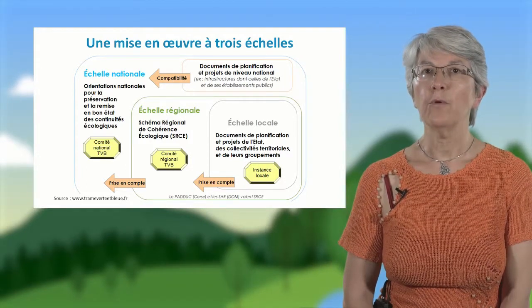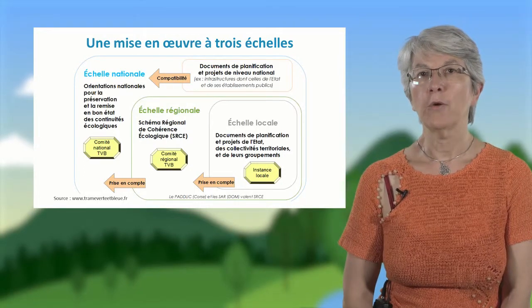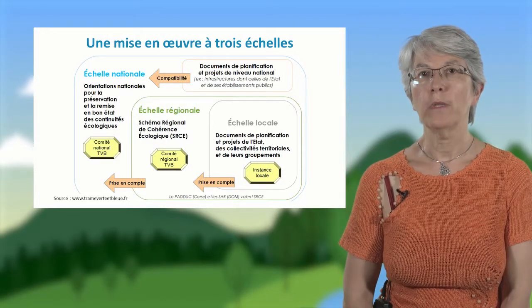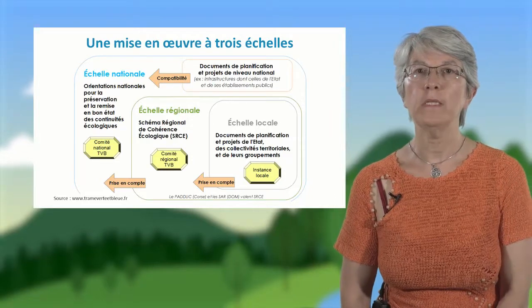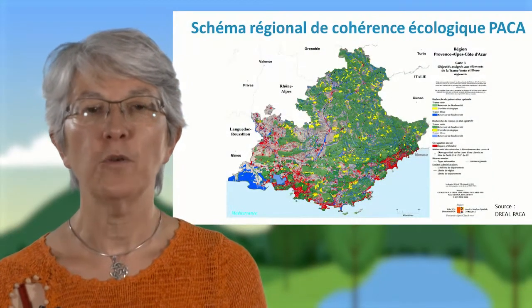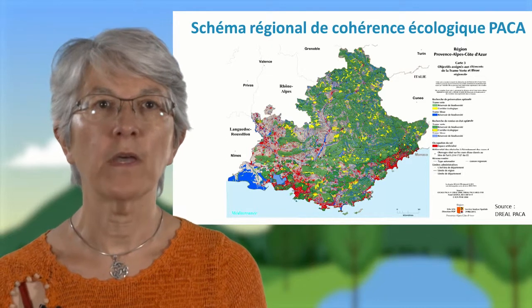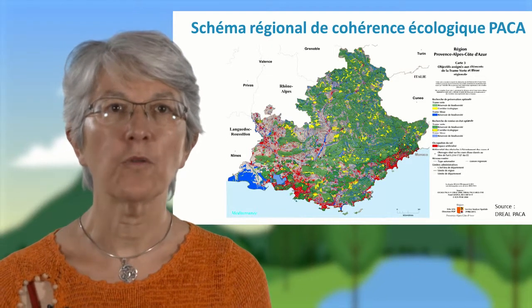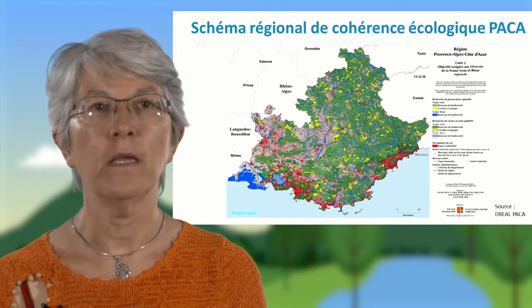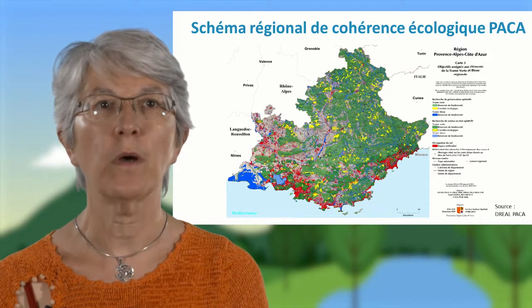La trame verte et bleue est inscrite avec l'obligation de protéger et de restaurer les continuités écologiques, à la fois dans le code de l'urbanisme et dans le code de l'environnement. Voici un exemple de schéma régional de cohérence écologique, celui de Provence-Alpes-Côte d'Azur, où les réservoirs de biodiversité en vert représentent 59% du territoire régional et les corridors en jaune représentent 4% du territoire régional.